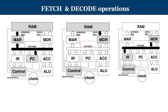Let us revisit what we saw yesterday in our fetch and decode operation. During the fetching operation, the value from the program counter goes to MAR, then to RAM, and from there the instruction reaches MDR, and from MDR it goes to the IR. Decoding happens in IR with the help of the control unit and necessary control signals are generated. This is how various registers — program counter, MAR, MDR, and IR — work together to ensure smooth fetching, decoding, and execution.